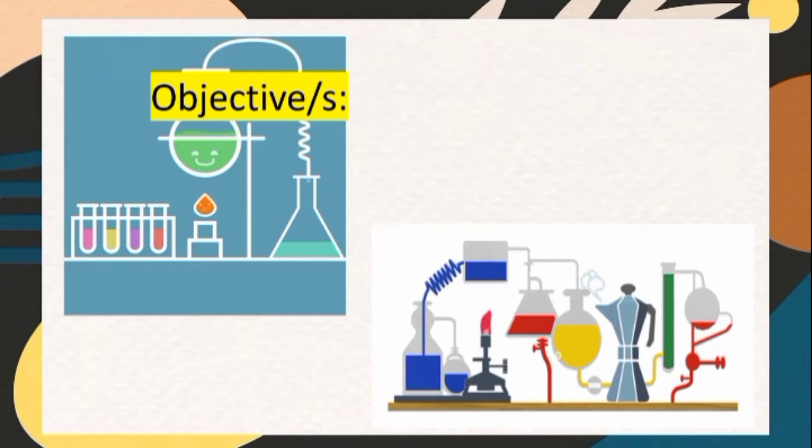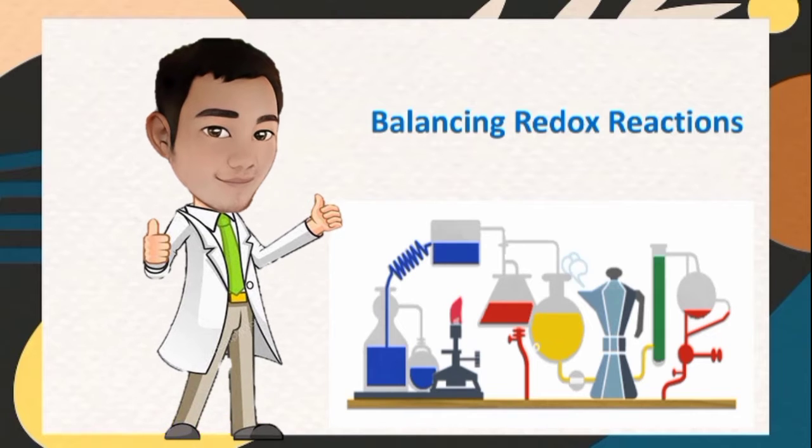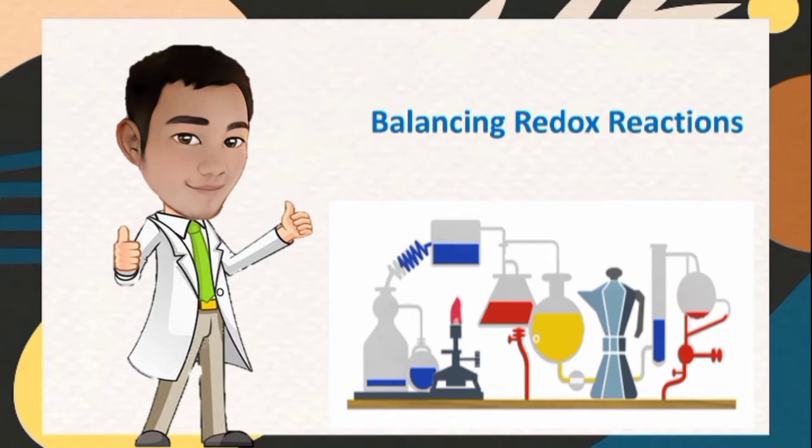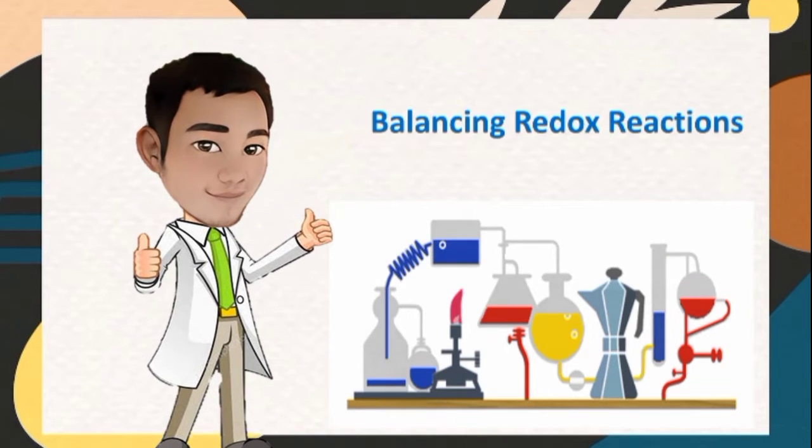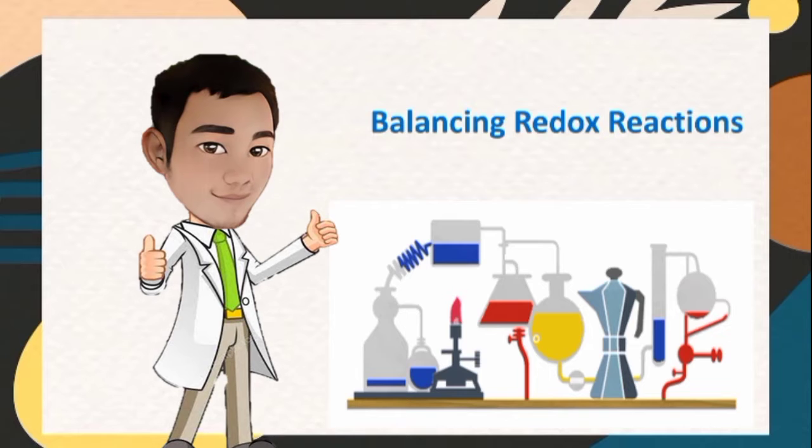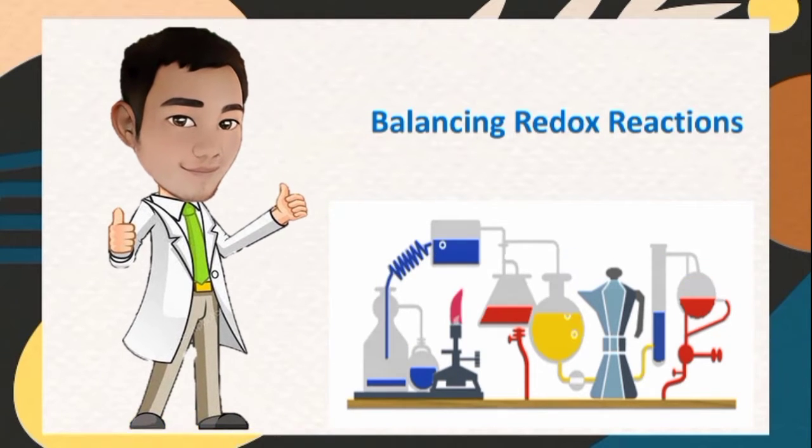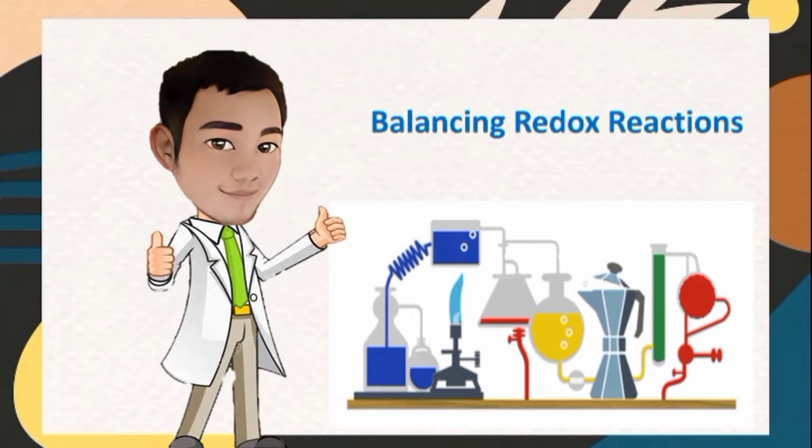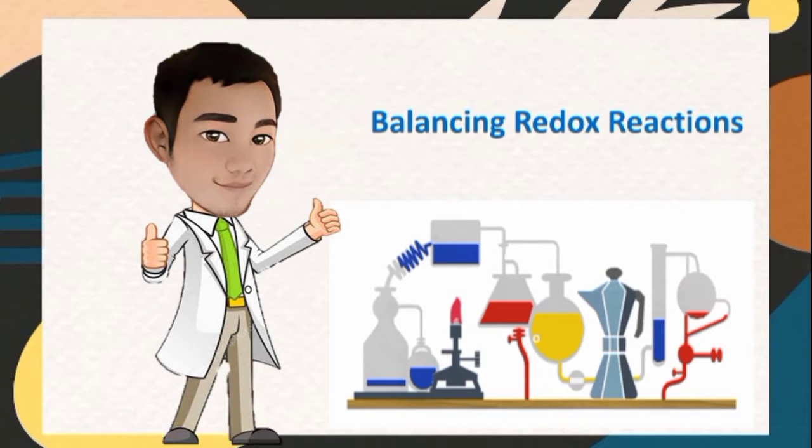After this video lesson you are expected to balance redox reactions using the change in oxidation number method. A redox process involves the coupled reactions of oxidation and reduction. Oxidation involves the loss of electrons by the substance being oxidized. The substance that oxidizes is called the oxidizing agent and causes itself to be reduced during the process.